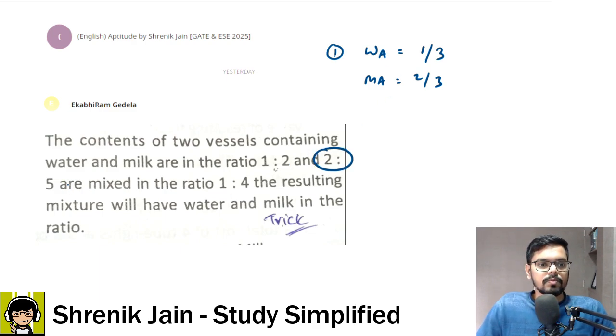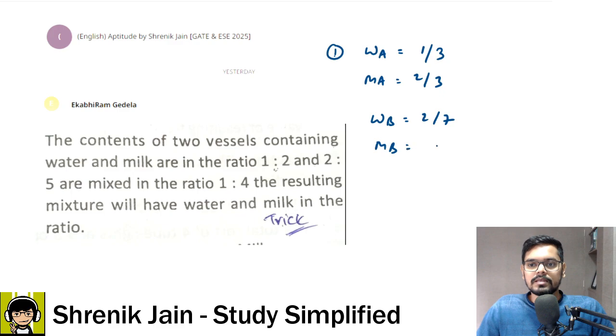What about vessel B? Vessel B, water to milk is 2:5. Therefore, water in B is 2/7 and milk in B is 5/7, correct?